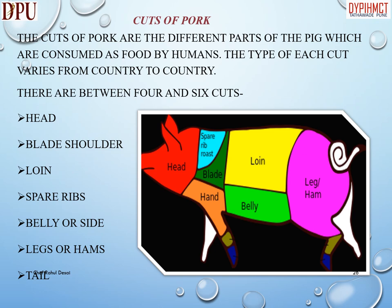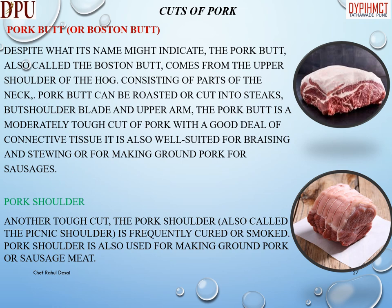Cuts of pork: the cuts of pork are the different parts of the pig consumed as food by humans, and the type of each cut varies from country to country. There are between four and six primal cuts: head, blade shoulder, loin, spare ribs, belly or side, and legs or hams. Pork butt or Boston butt comes from the upper shoulder of the hog, consisting of parts of the neck, shoulder blade, and upper arm. Pork butt can be roasted or cut into steaks, and is a moderately tough cut with a good deal of connective tissue, well suited for braising, stewing, or making ground pork for sausages.